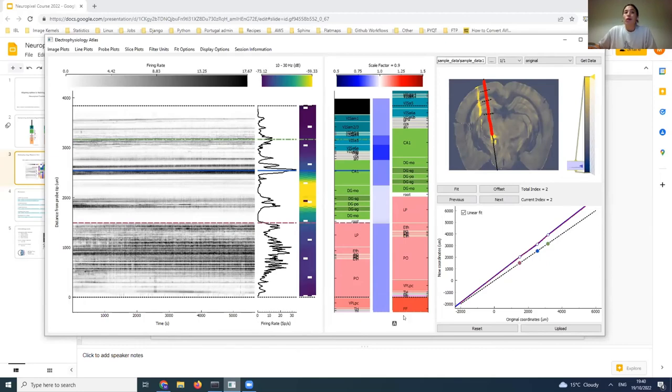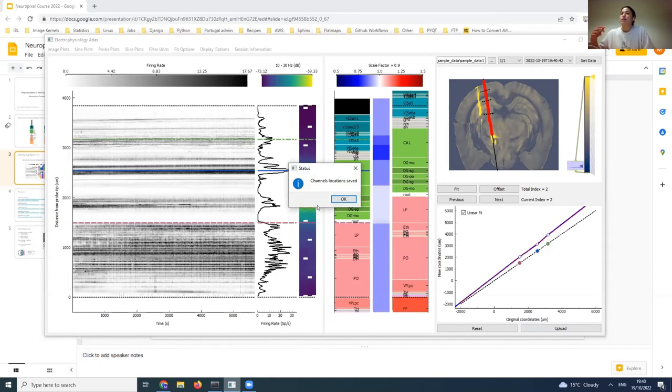Once you're happy with your alignment, you can then just hit this upload button, confirm, and it will save the new location of your electrode channels and their coordinate in 3D space, and also the brain region that they've been assigned onto a file on your local system. And you can then use those.